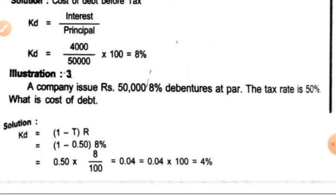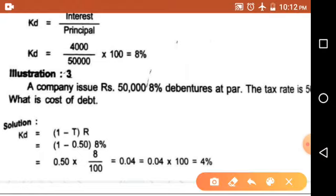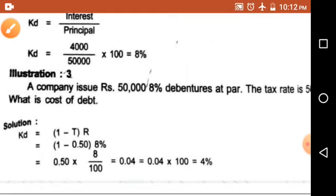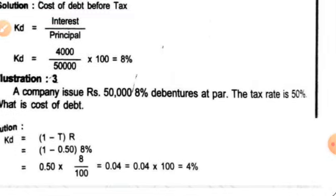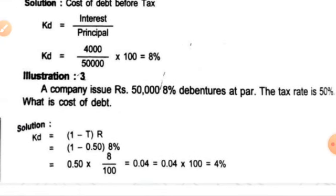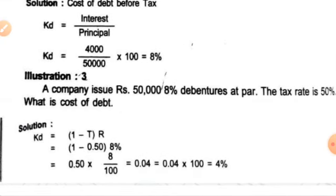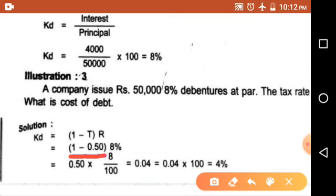Now we need to apply the formula considering tax. The formula is: KD = (1 - T) × R. KD equals 1 minus T, into R. T means tax, so convert 50% to 0.50. R means rate of interest, which is 8%, so 0.08. Now we have: 1 minus 0.50 into 8%.